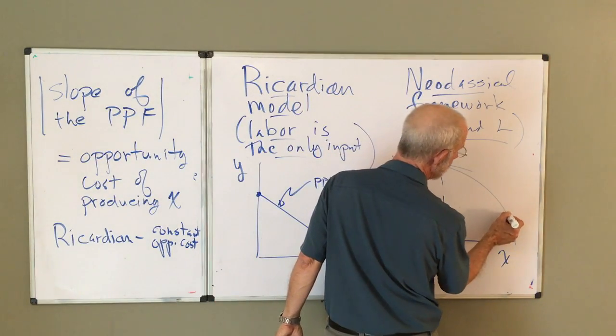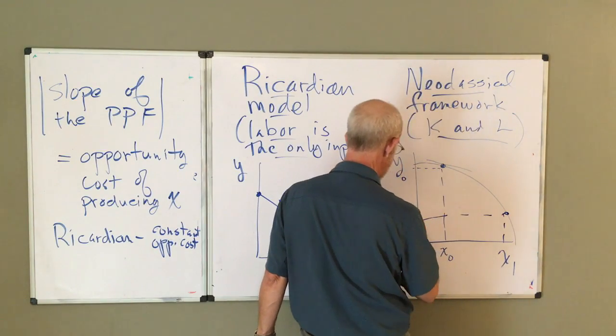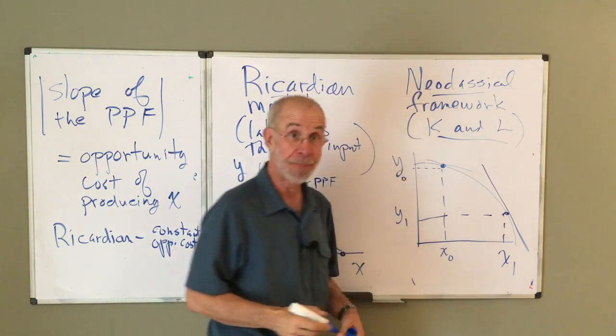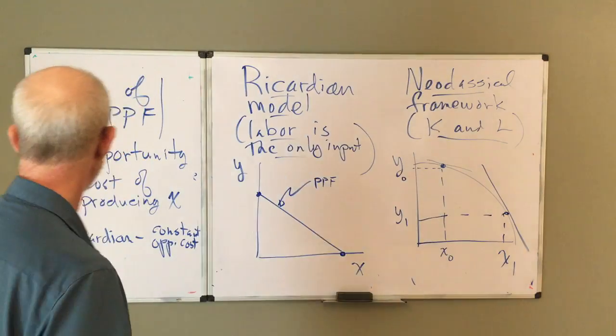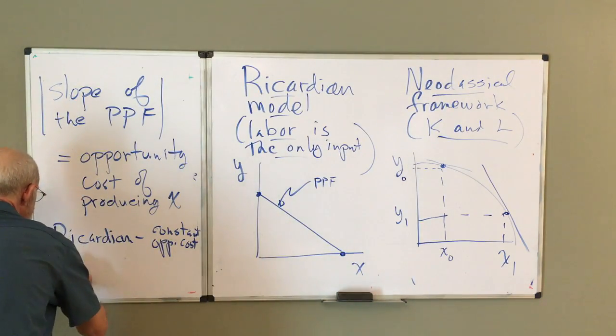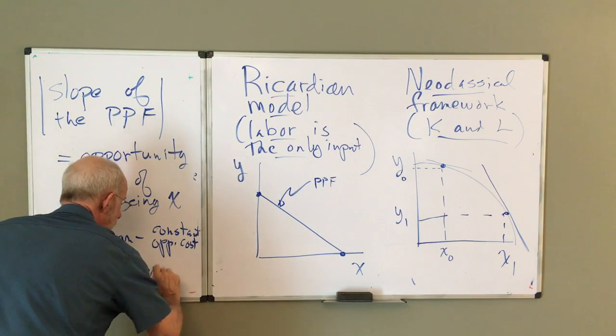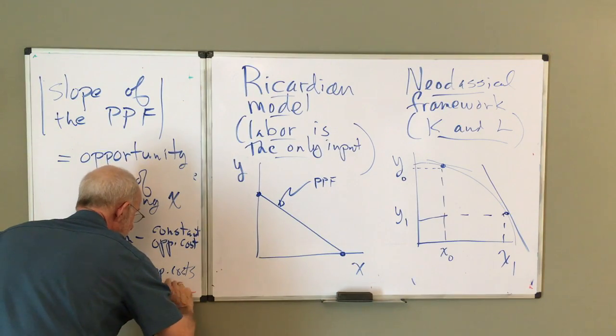As I produce more and more X and less Y, that slope gets bigger and the opportunity cost rises. So, in the neoclassical framework, opportunity costs are rising.